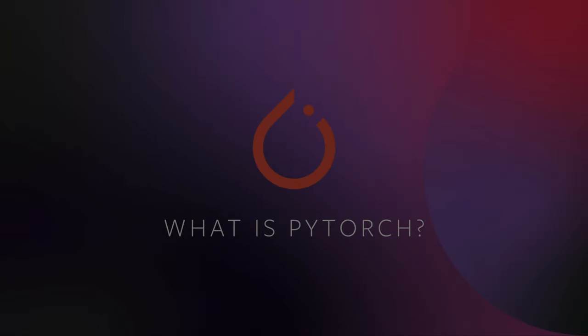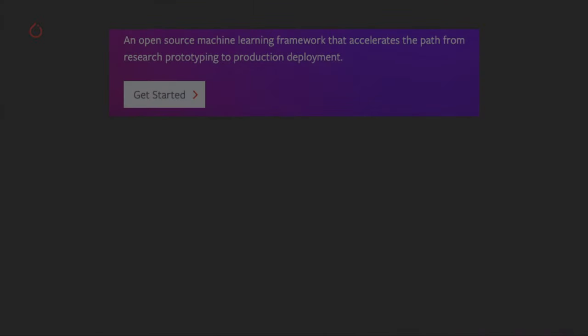So what is PyTorch? PyTorch.org tells us that PyTorch is an open source machine learning framework that accelerates the path from research prototyping to production deployment. PyTorch is software for machine learning. It contains a full toolkit for building and deploying ML applications, including deep learning primitives such as neural network layer types, activation functions, and gradient-based optimizers. It has hardware acceleration on Nvidia GPUs, and associated libraries for computer vision, text and natural language, and audio applications.